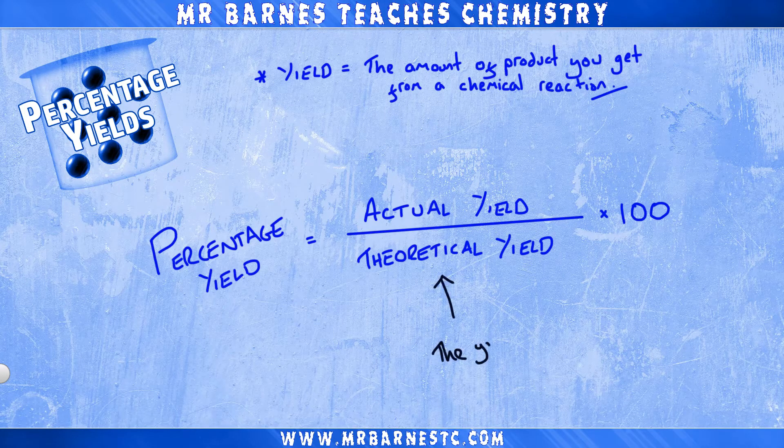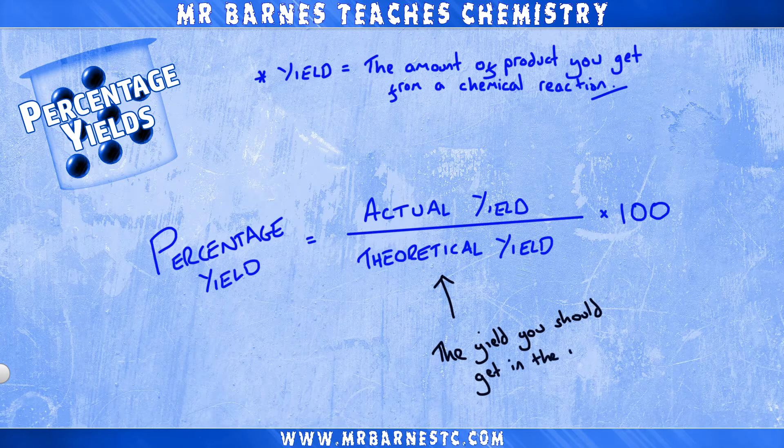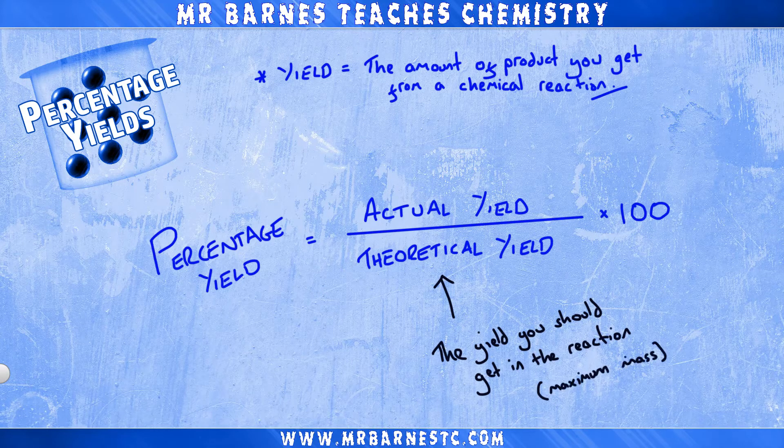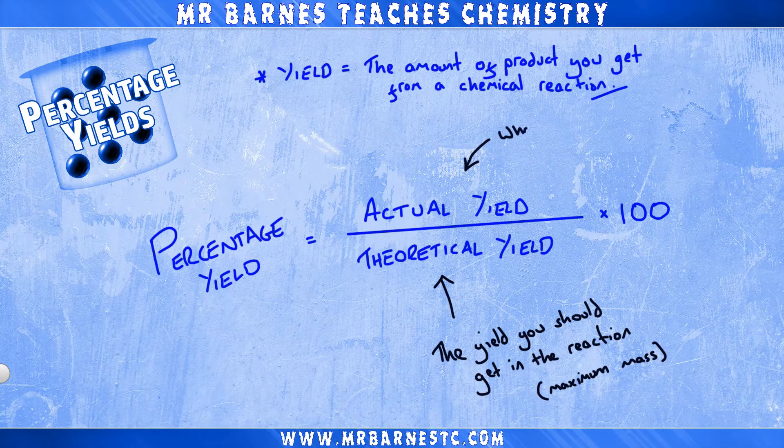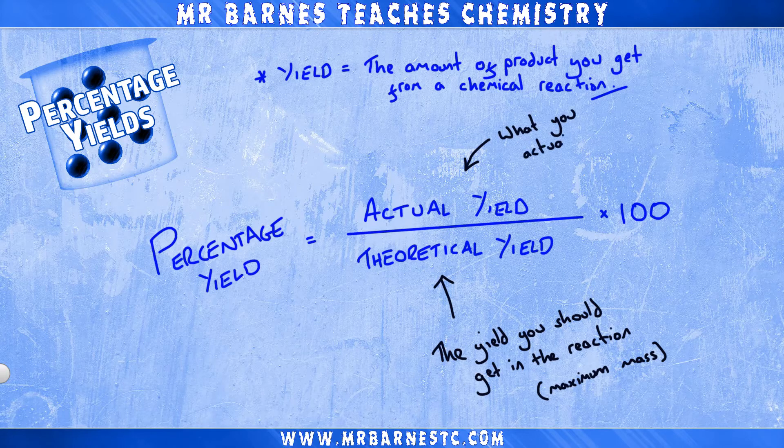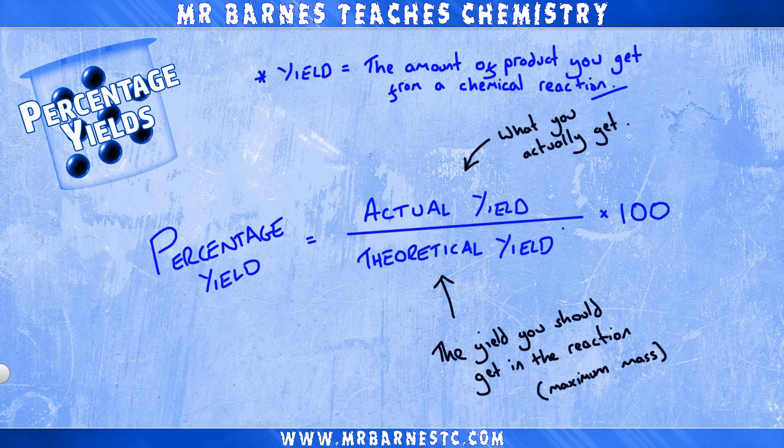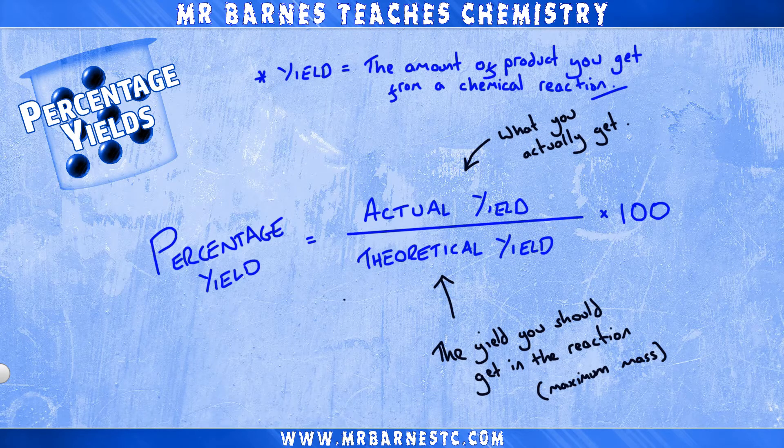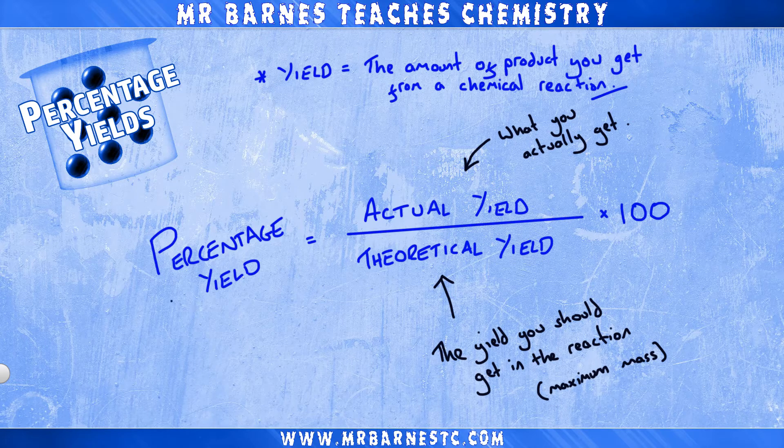The theoretical yield is the yield you should get from the reaction. In the past we've talked about this as the maximum mass, and then the actual yield is the actual amount of product you get from carrying out a chemical reaction, which is usually less than the theoretical yield, less than 100%. The percentage yield is a comparison between the two.